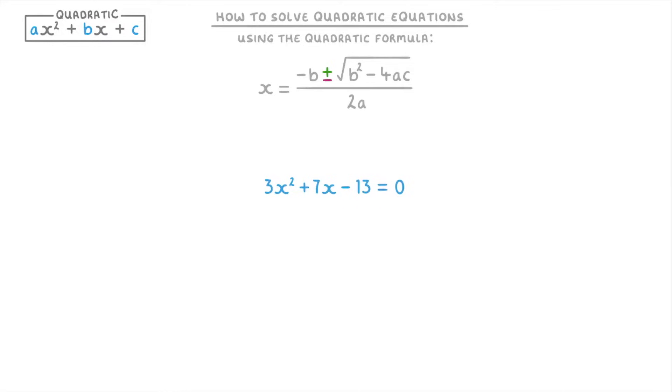For example in this equation 3x² + 7x - 13 = 0, a is 3 because there's a 3 in front of the x² term. b is 7 and c is -13.